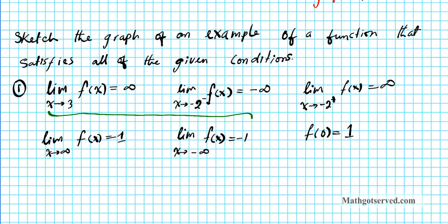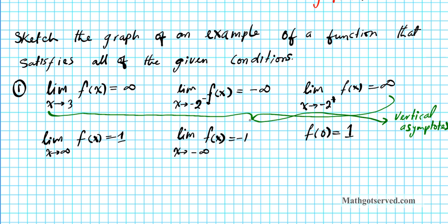So those three are vertical asymptotes. And if you look at the next two conditions, as x approaches negative infinity or infinity, you have horizontal asymptotes. So those two are your horizontal asymptotes.